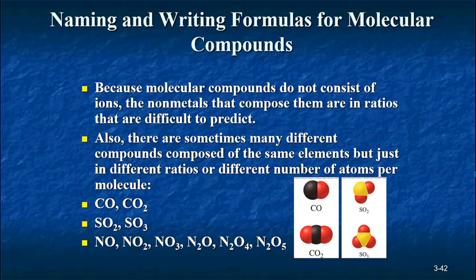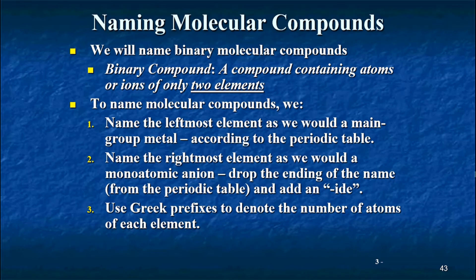So when we name a molecular compound, therefore, we have to indicate in the name how many units of each element are in there. Now, there are many different kinds of molecular compounds. Some of them are composed of two, three, maybe four different elements. So we're going to focus our nomenclature here into just what we call binary molecular compounds. A binary compound is a compound that contains atoms or ions of only two elements. Notice that to say that a compound is binary simply says there's only two elements involved. So an ionic compound like sodium chloride could be considered binary because there's only two elements involved. But we're going to focus here on molecular compounds.